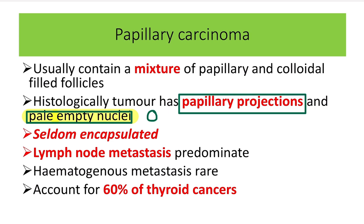To summarize the diagnostic features of papillary carcinoma: first, papillary projections are present under the microscope. Second, pale empty nuclei — orphan Annie nuclei. Third, the tumor is seldom encapsulated, meaning it is non-capsulated. This non-encapsulated nature is due to the papillary projections making it difficult to cover the entire surface.